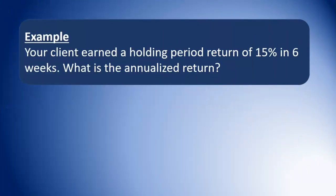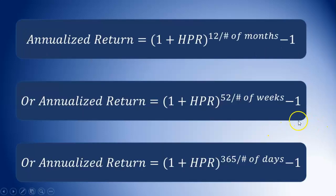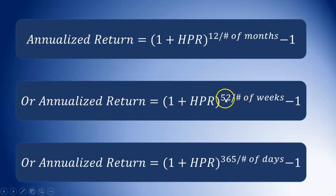So let's work through this example. Our client earned a holding period return of 15% over a six-week period — what's the annualized return? We're using the weeks formula. The holding period return is 15%, or as a decimal, 0.15, raising it to the power of 52 divided by 6.